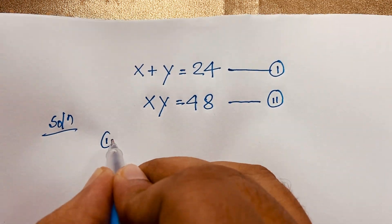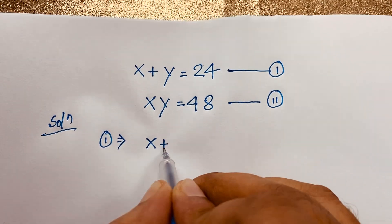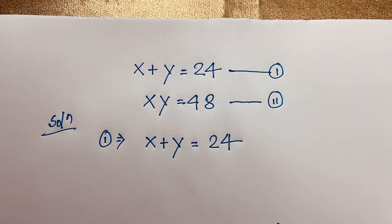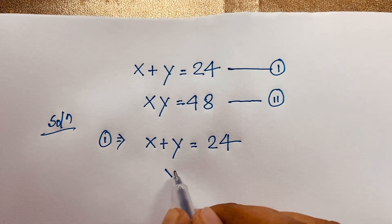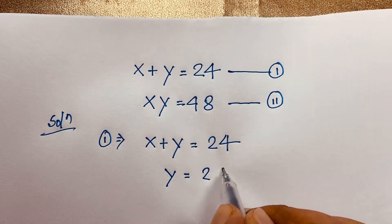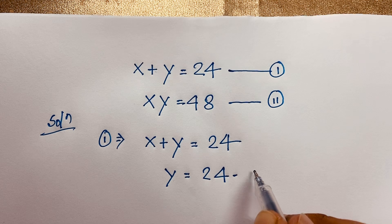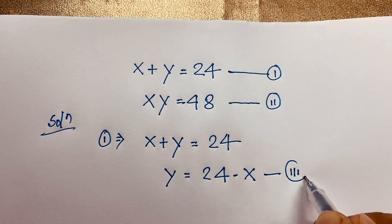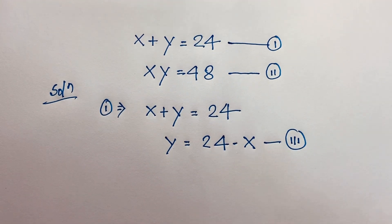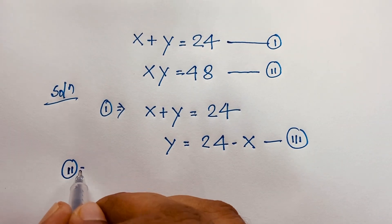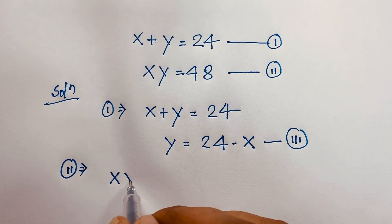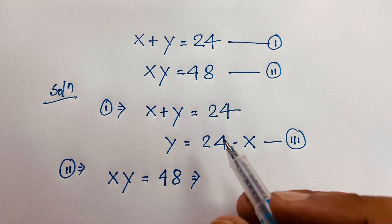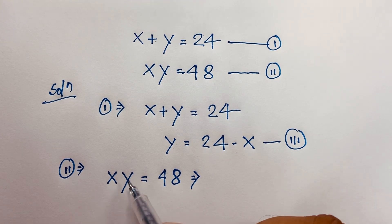Our first equation is x plus y is equal to 24. From this, y is equal to 24 minus x. This is our third equation. Our second equation is xy is equal to 48. Now I substitute y is equal to 24 minus x into the second equation.